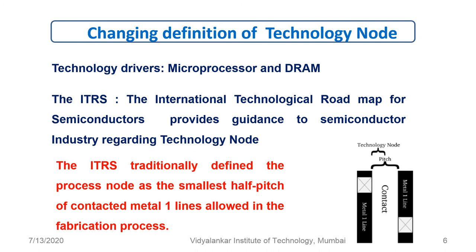Prominently, there were two technology drivers: microprocessors and DRAMs. During the 90s, microprocessor development was driven by higher frequencies, while DRAM development was dominated by demand for higher capacities. Since higher capacities were achieved through higher densities, it was DRAM that became the driver of technology scaling, and this continued until around 2000.